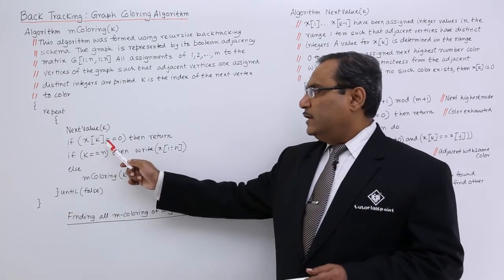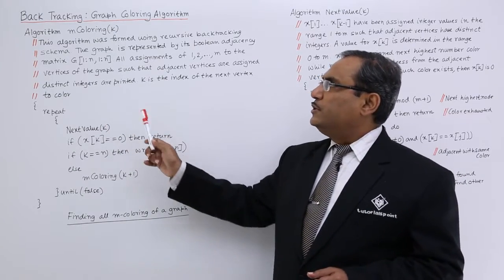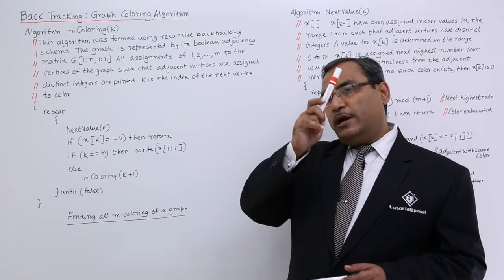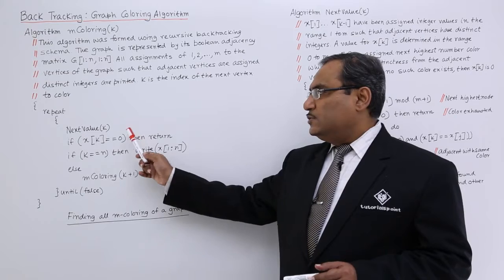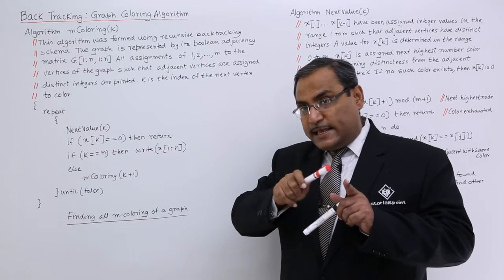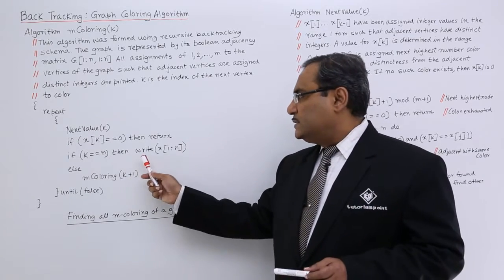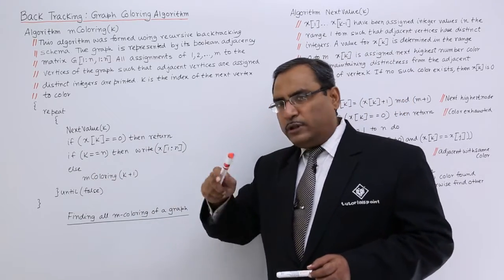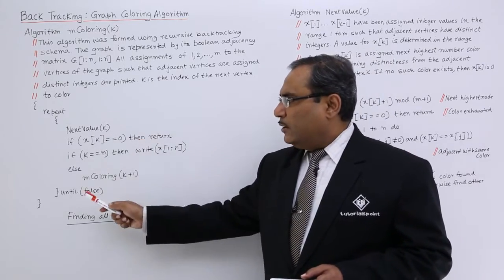If x[k] equals 0, meaning it could not suggest a color, then return — returning to the m-coloring(k-1) instance of the recursion. If k equals n and x[k] is not equal to 0, that means the x array has been completely filled with a complete solution set, so print the solution: write x[1:n]. Otherwise, it will go for the next node's coloring by calling m-coloring(k+1).